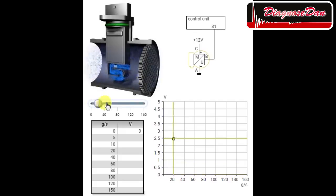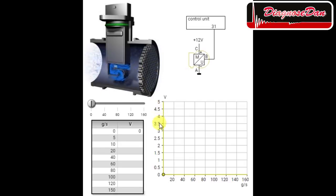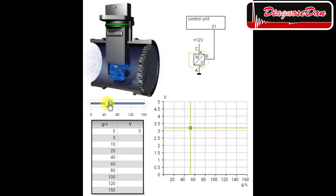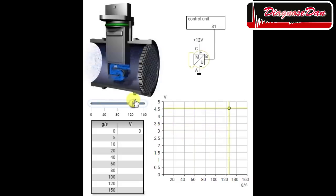With this slider we can increase and decrease the amount of air entering the engine. Now let's see what happens to the signal voltage at point B when we increase the air going into the engine. Let's increase the air and we see the signal voltage going up — let's increase it even more and we can see the voltage gets even higher.